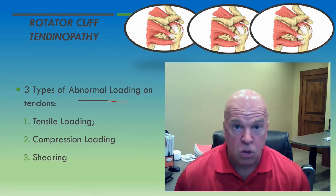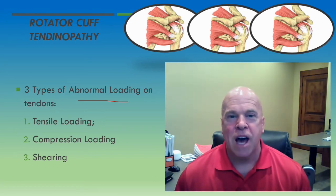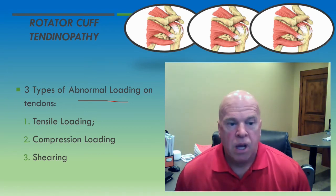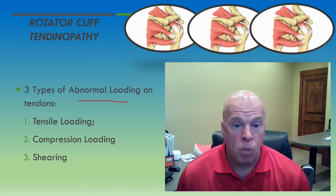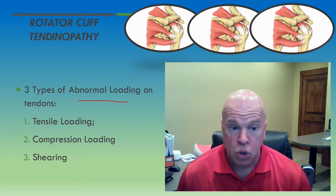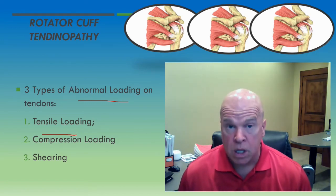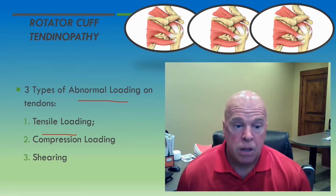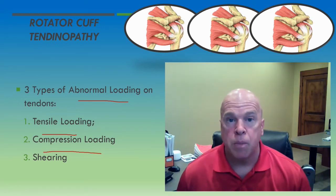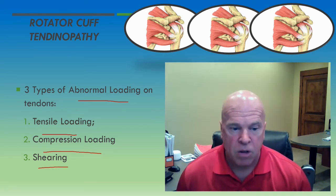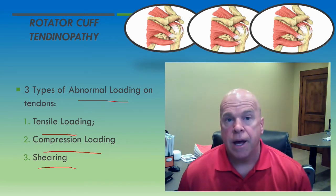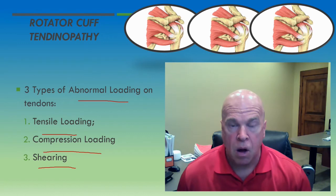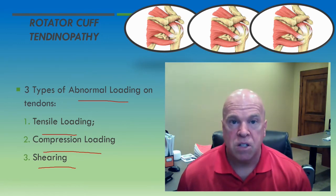Improper loads, excessive loads, and abnormal loads — such as what are commonly encountered in the workplace — do just the opposite and cause tendons to degenerate and become painful. In the literature, there are described three different types of abnormal loads that tendons can be exposed to: excessive and/or abnormal tensile loading, which is linear loading along the line of the collagen fibers; abnormal compression loading; and abnormal shearing loading, which can also upset the internal homeostasis of the tendon cells.